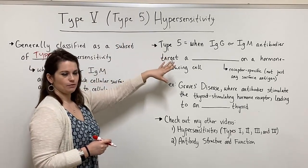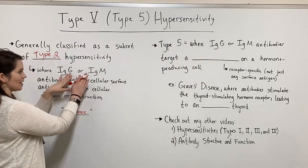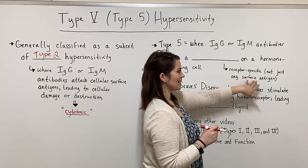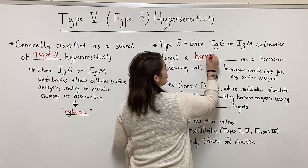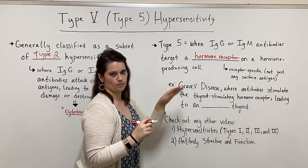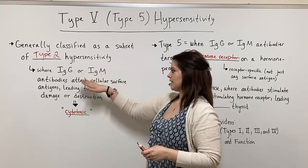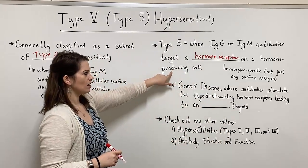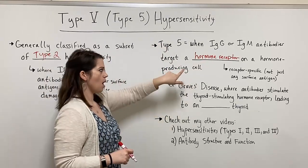So what is type 5? Type 5 hypersensitivity is when you have one of those same types of antibodies — IgG or IgM — target not simply any surface antigen, but specifically target a hormone receptor on a hormone-producing cell. So whereas type 2 is looking at really any type of cell and antibodies attacking any surface antigen, type 5 is more specific: we're looking at hormone-producing cells and antibodies targeting a hormone receptor on that hormone-producing cell.